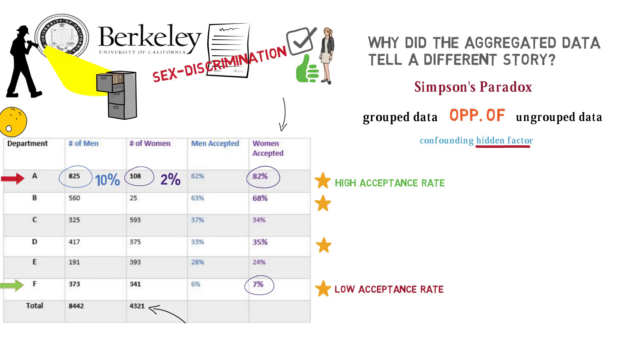And this is where it goes all wrong. Compared to the men, a much larger portion of the women applied to Department F, which has a really low acceptance rate. Around 4% of all men applied here, while 8% of all the women applied here.